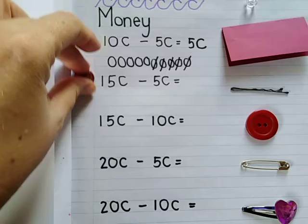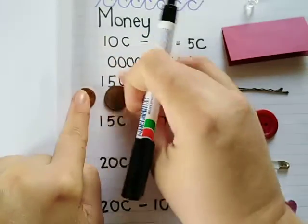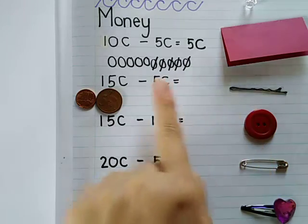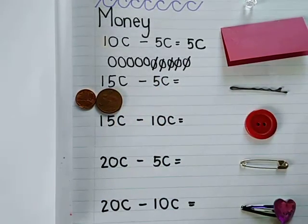Over here it says that I've got 15 cents, so there's my 15 cents and I want to buy this hairpin for 5 cents, so again I will draw that.